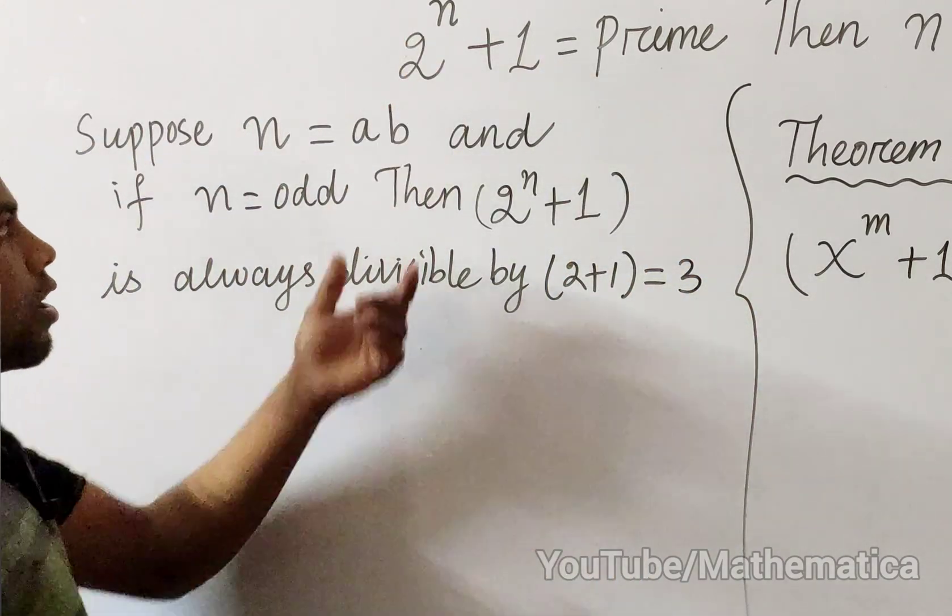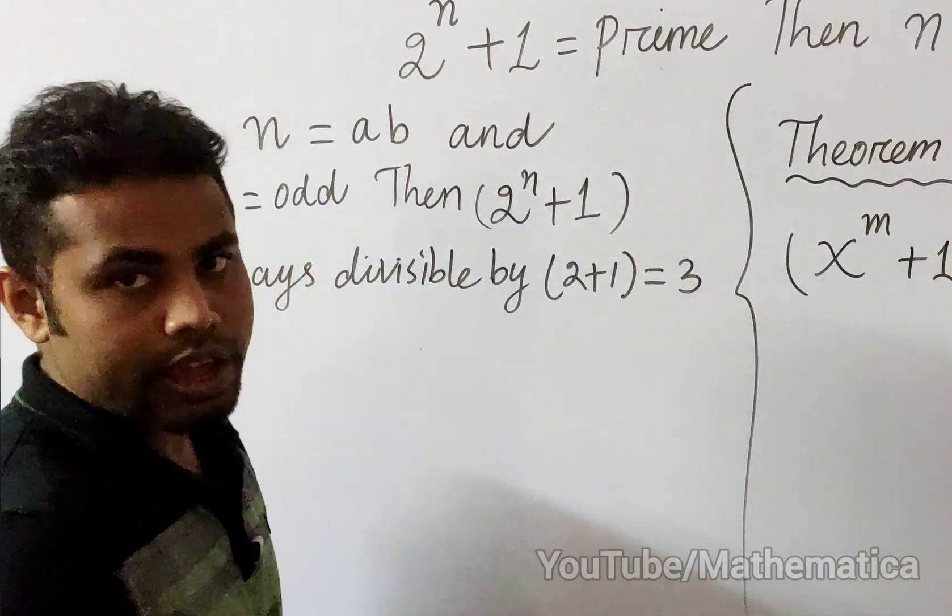If n is odd, then our number is always divisible by 3, hence not prime.